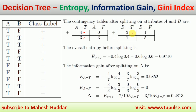Similarly, we need to write the contingency table for B also. Again, plus and minus are the class labels. B equal to true and B equal to false are the two possible cases. There are 4 true examples; out of that 3 are positive and 1 is negative. The remaining 6 are false examples: only one positive and the remaining 5 are negative. Using this contingency table, we can easily calculate entropy and information gain.